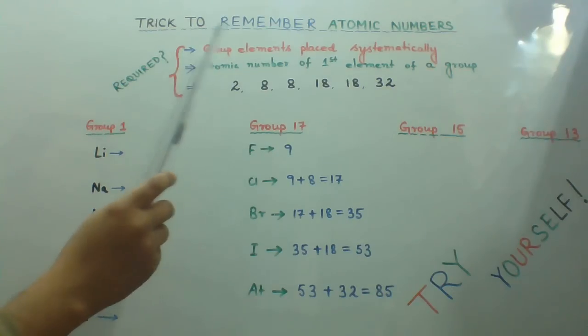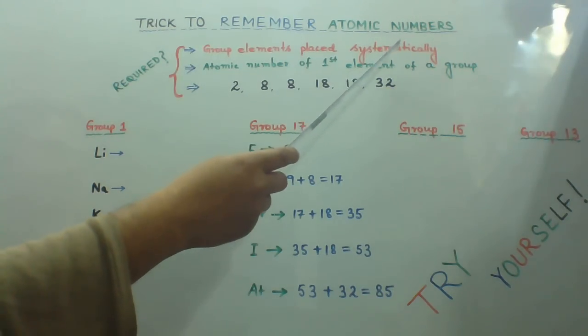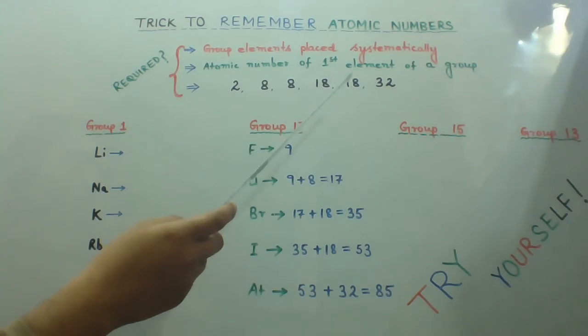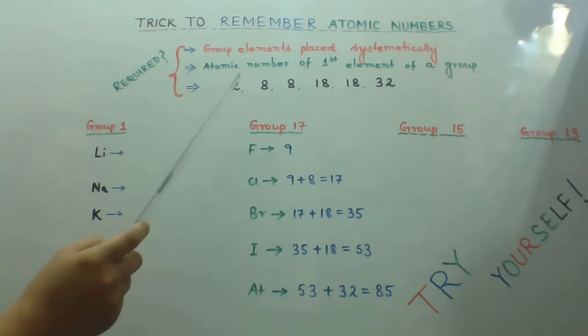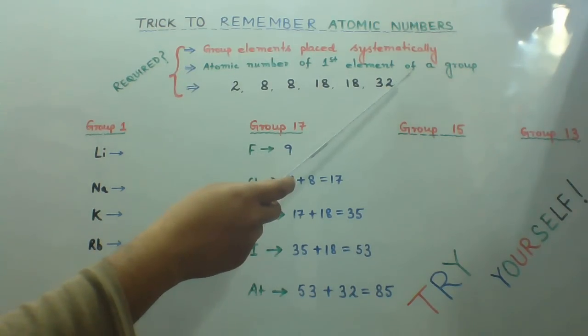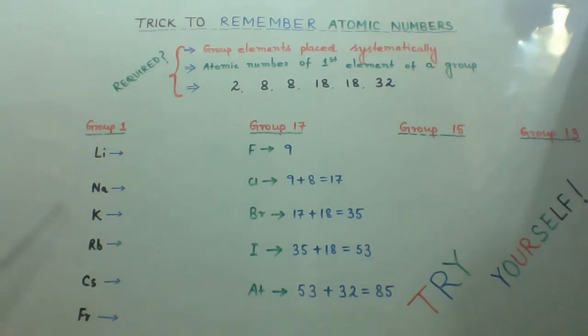First, group elements are placed systematically from top to bottom. Second, atomic number of the first element of the group. Third, the series: 2, 8, 8, 18, 18, 32. Let's take Group 1 elements. We have lithium, sodium, potassium, rubidium, cesium, and francium.